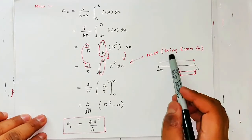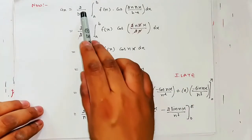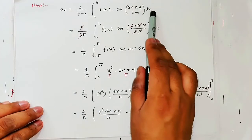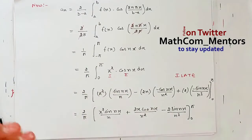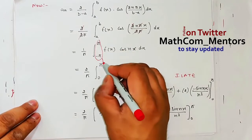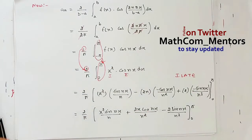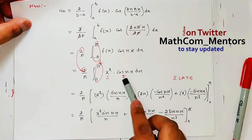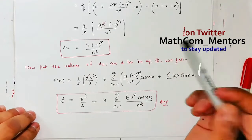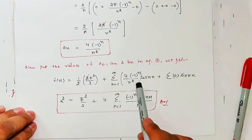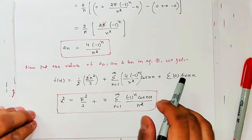Toh iske baad integration kar di — x² ki x³ aaye, uske baad limit put ki, aur wahaan se a₀ aa gaya. Similarly aₙ mein formula 2/(b−a) × f(x) cos(2nπx/(b−a)) dx, a to b — sub value put ki. Uske baad minus pi to pi ko change kar liya 0 se pi mein. Integration by parts lagaaya, aur upper limit aur lower limit direct put kar liye. Lower limit 0 thi, toh put karna kitna asaan ho gaya — 0, 0, 0 aa gaya. Toh yeh mera aₙ aa gaya. bₙ toh mera already 0 tha. Toh a₀, aₙ aur bₙ ki value put kar di — that's my answer.